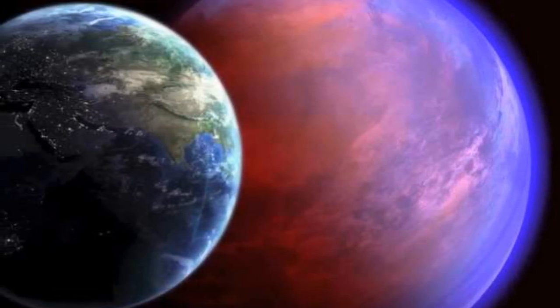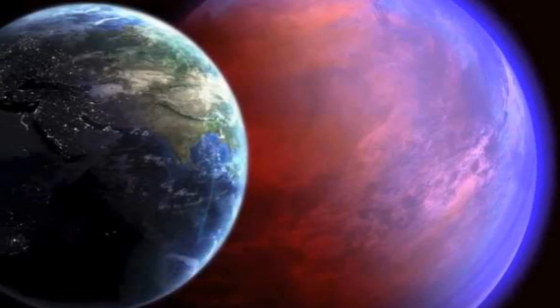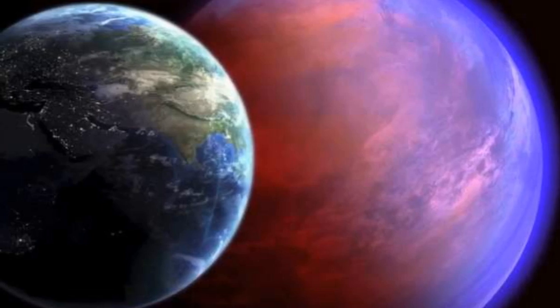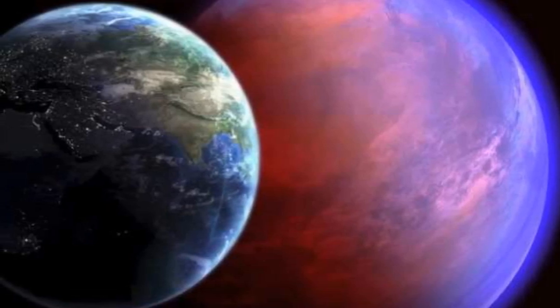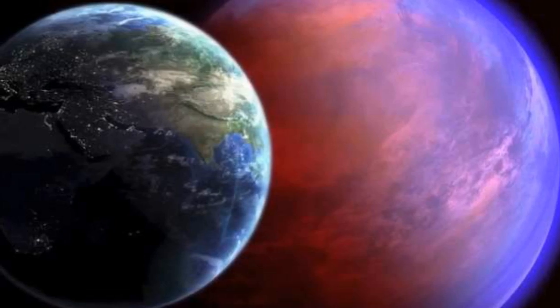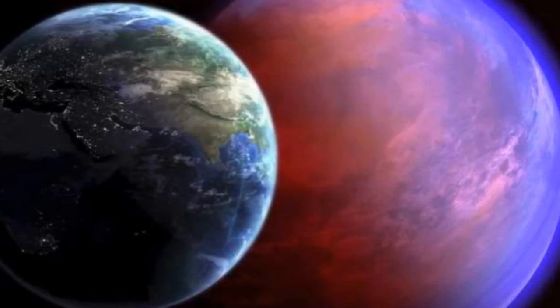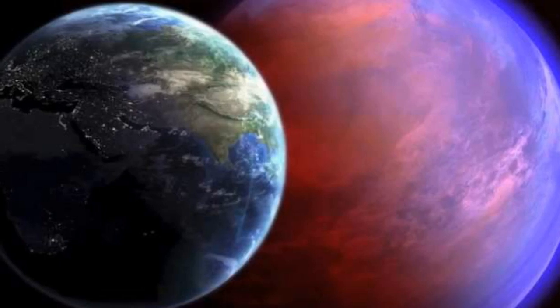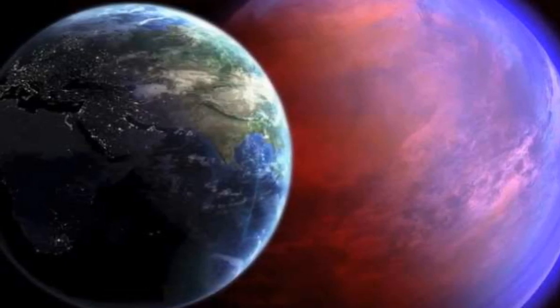The search is on for a second Earth that humans could colonize and now there's a new candidate, Wolf 1061c. The rocky orb, more than four times the mass of the Earth, is the closest potentially habitable planet found outside our solar system so far, orbiting a star just 14 light-years away.